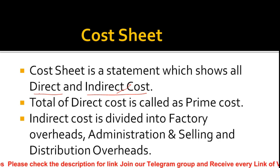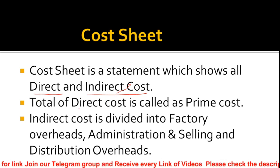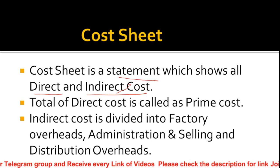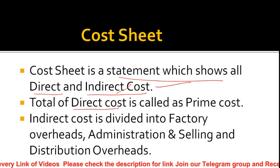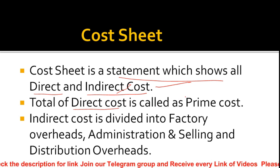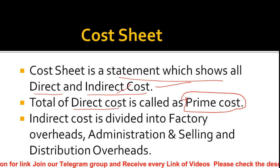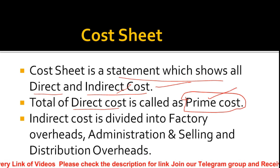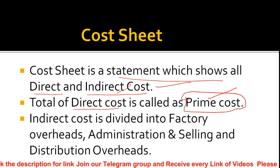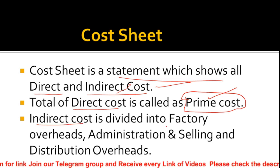First, we have direct and indirect costs. Direct cost is a cost which is directly related to production. The total of all direct costs is called prime cost. Indirect costs are divided into three parts.